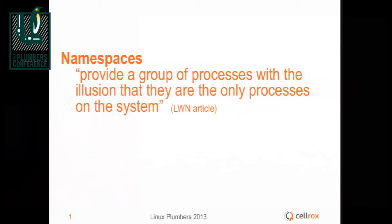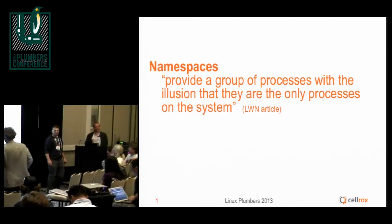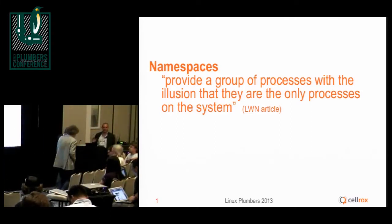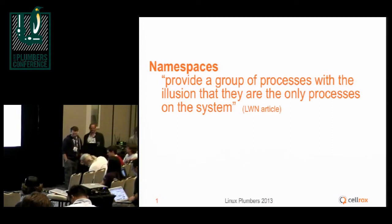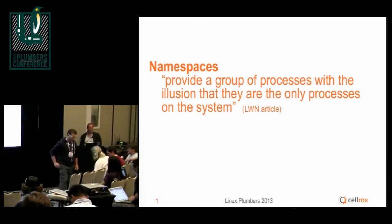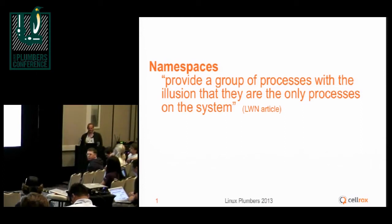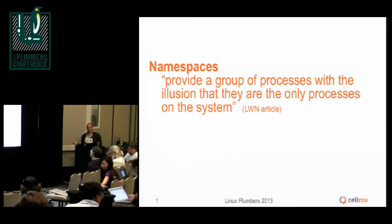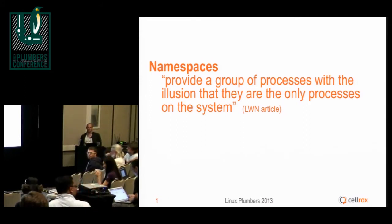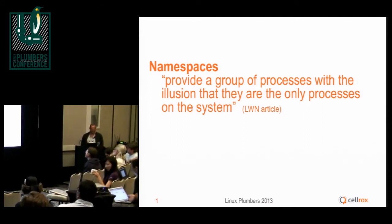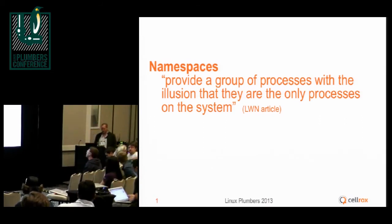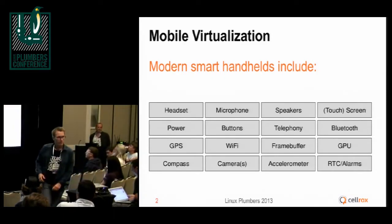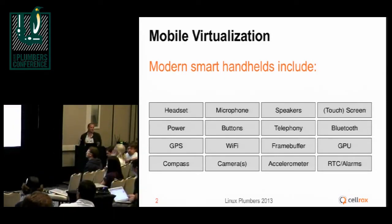I'm going to be bold and use a few slides from my presentation yesterday in LPC, so if you saw it already, just think about something else. I'll do it very quick. So namespaces — if I take the definition from LWN, it's a method to provide a group of processes with the illusion that they are the only processes running on the system. Currently they cover almost everything that we need in Linux. What they do not cover, which is interesting to us in the virtualization for mobile devices, is the case of peripherals and a variety of devices that exist in the system.